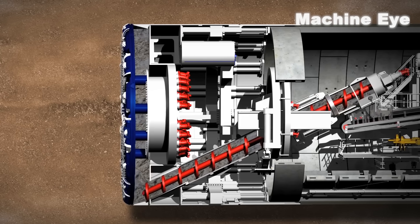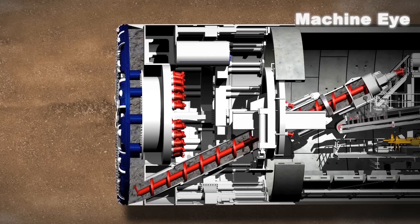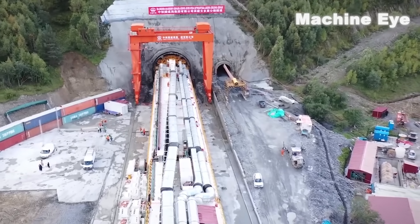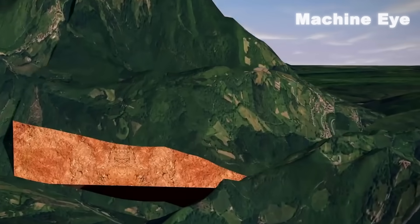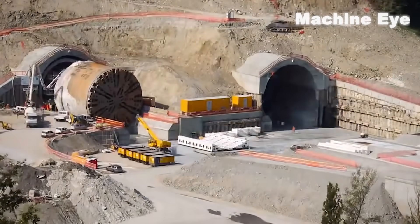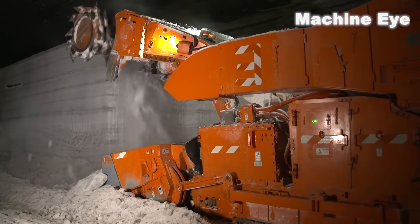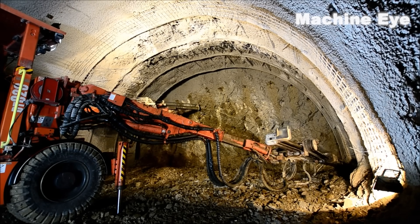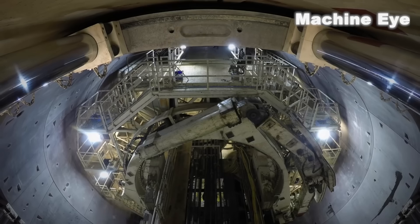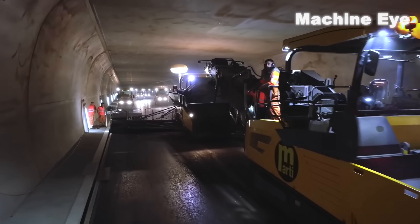One drawback of the shield machine is its speed — generally it can only dig a few meters per day. Additionally, it cannot work in some extreme environments. As the shield machine moves forward, the rock beneath the ground can gradually become hard. At that point, the shield machine must be withdrawn, and construction continues using traditional mining methods: excavating a small section of tunnel, providing support, then expanding the cross-sectional area step by step with support at each stage.